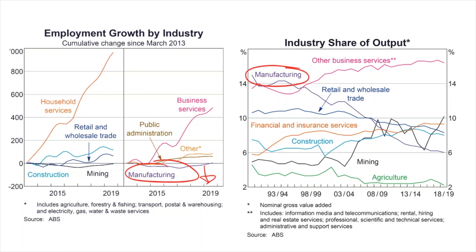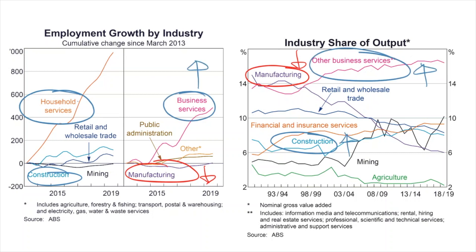One example of structural change is the decline of the manufacturing industry and growth of other industries as a result of increased trade with China. You can see the decline of employment in manufacturing and a bit of a time lag before we saw growth in other industries. This decline and time lag is evidence of structural unemployment.